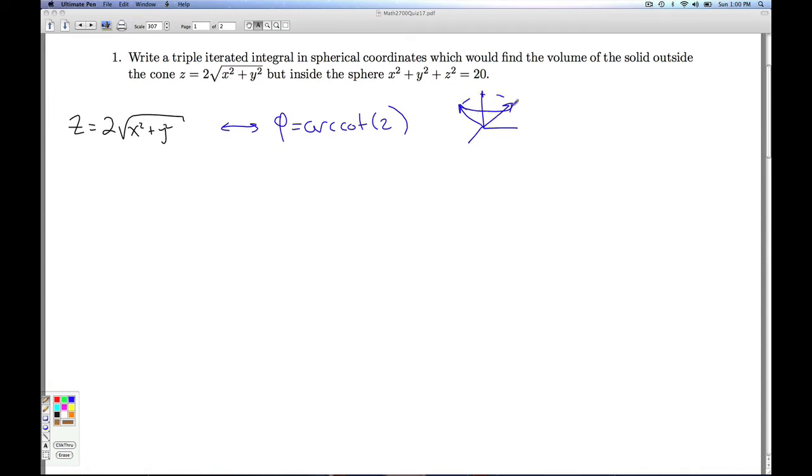So the cone z equals 2 square root x squared plus y squared in spherical coordinates is equivalent to the bound phi equals arc cotangent of 2. And hopefully that makes sense. Cones with the vertex at the origin have an equation of phi equals some constant angle. Okay, x squared plus y squared plus z squared is 20. Well, if you need to go through the substitutions, you get rho squared sine squared phi cosine squared theta plus rho squared sine squared phi sine squared theta plus rho squared cosine squared phi is 20. Factor out a rho squared sine squared phi here. You get Pythagorean magic. You get rho squared sine squared phi.